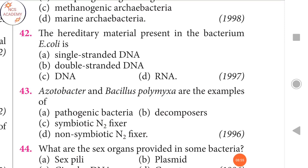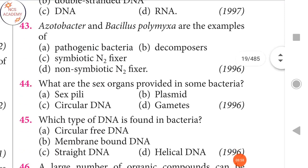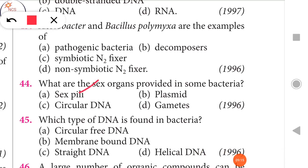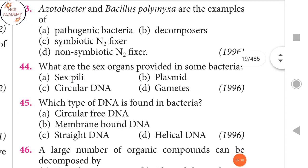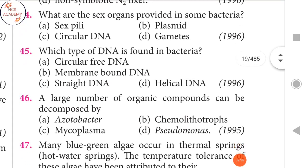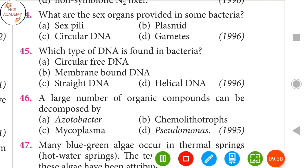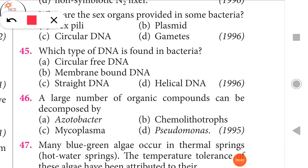Next question: Acetobacter and Bacillus polymyxa are examples of non-symbiotic nitrogen fixers. That is the right answer. Next question: What are the sex organs provided in some bacteria? Mostly sex pili — that is the right answer. Which type of DNA is found in bacteria? Mostly circular free DNA — that is the right answer.